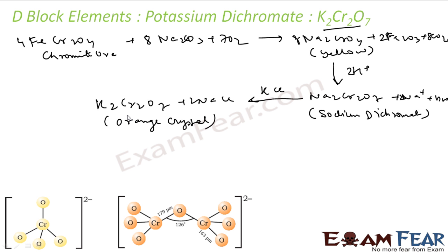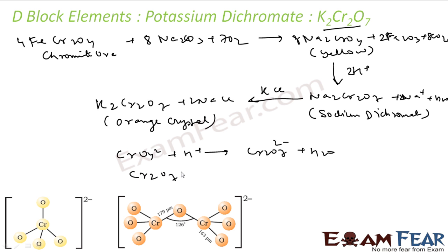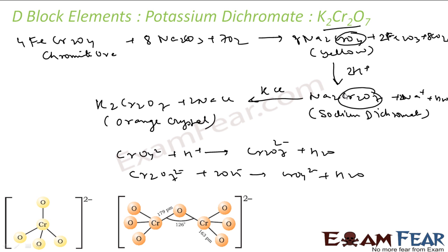Note that chromates and dichromates are interconvertible in aqueous solution depending on the pH. For example, CrO₄²⁻ in acidic conditions becomes Cr₂O₇²⁻ and water. Conversely, Cr₂O₇²⁻ in basic solution becomes CrO₄²⁻ and water. So CrO₄²⁻ and Cr₂O₇²⁻ are interconvertible — adding H⁺ makes it acidic and gives Cr₂O₇²⁻.